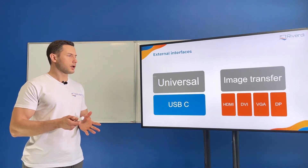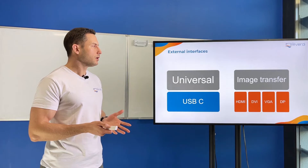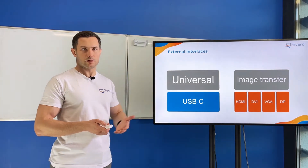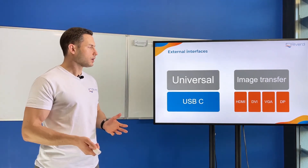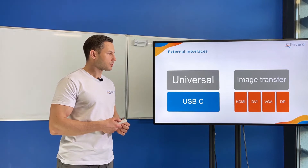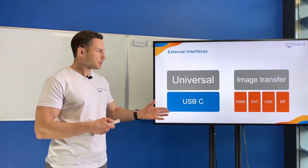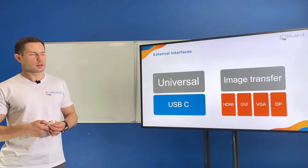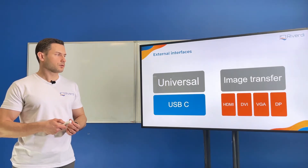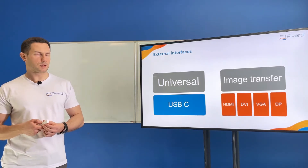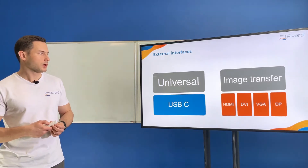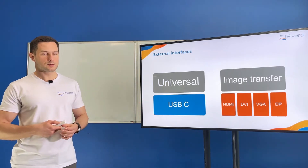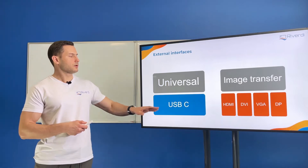For example, it can be HDMI — with HDMI we can connect our computer with the monitor or TV. Then DVI, usually used for monitors only. VGA is an old image interface for monitors. And DisplayPort — it's like a newer HDMI, let's say.